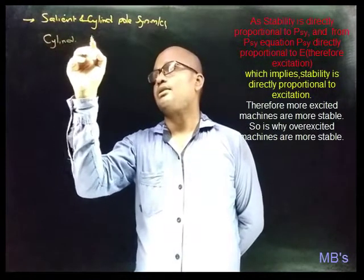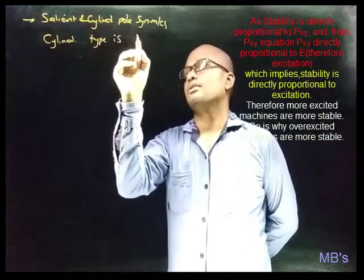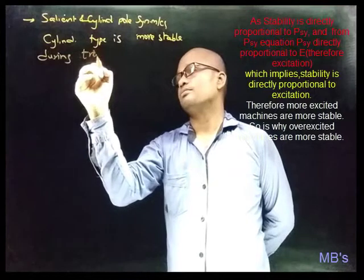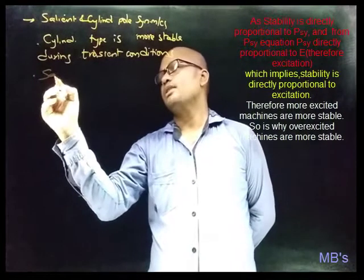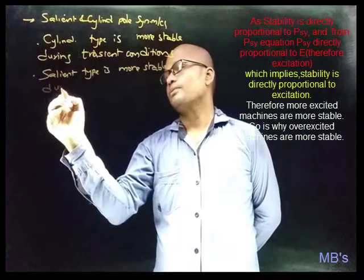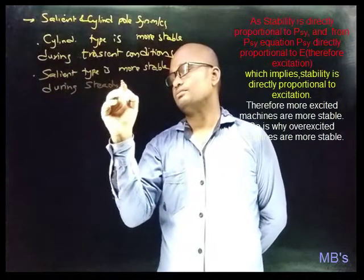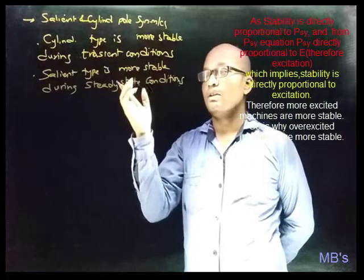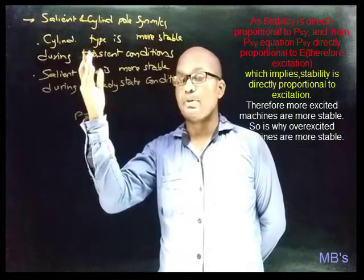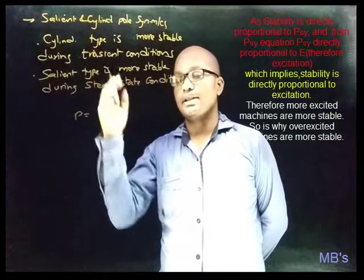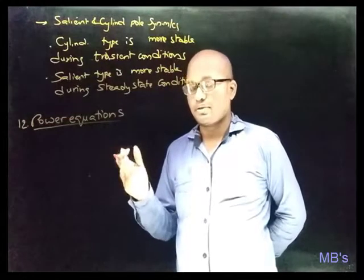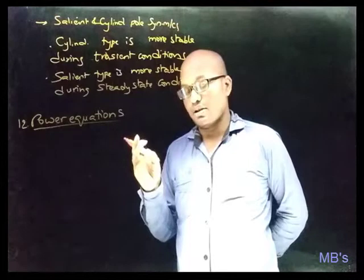In synchronous machines, air gap length is maximum, which means the power factor is very poor, but this is not a drawback because the power factor can be controlled by varying the field excitation. The required power factor is obtained by varying excitation, and stability is maintained by keeping the air gap length large. The air gap length of synchronous machines is four to five times that of induction machines. Among synchronous machines, the cylindrical type is more stable during transient conditions and the salient pole type is more stable during steady-state conditions.